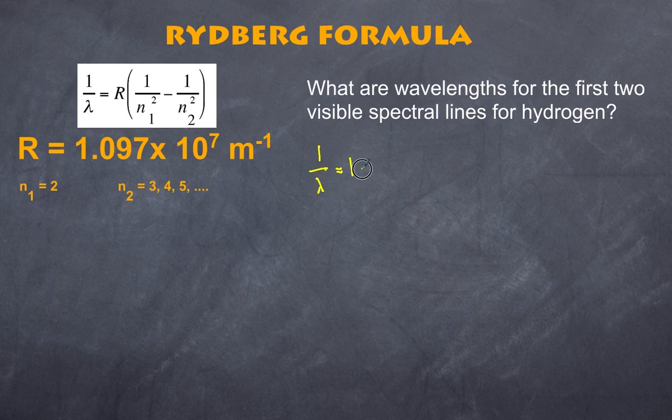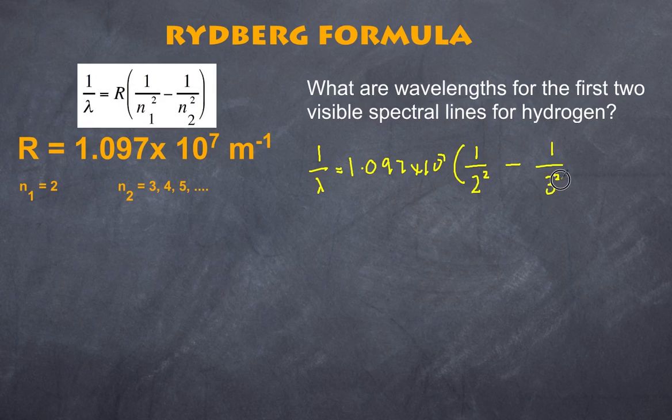So, we know that 1 over the wavelength is equal to R. Now, R, of course, is 1.097 by 10 to the power of 7. And then we multiply this. And remember, the first number must always be 2. So, that's 2 squared minus 1 over... Now, we're going to do the first 2. So, the first value is going to be 3 squared.